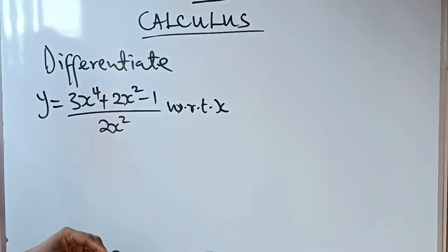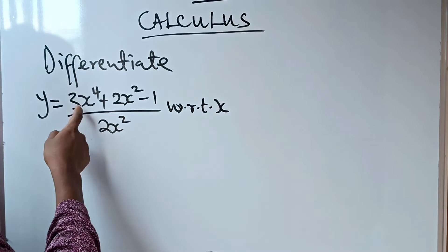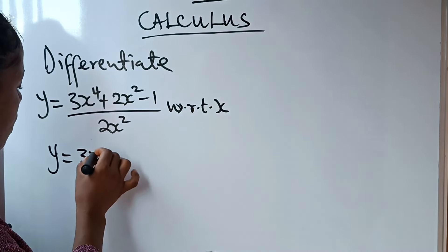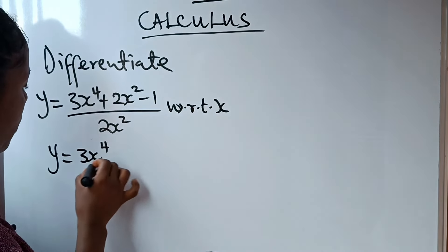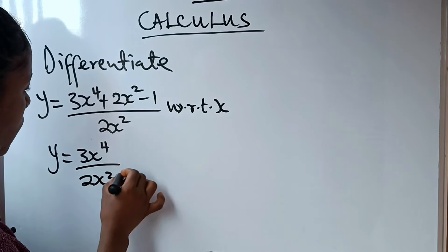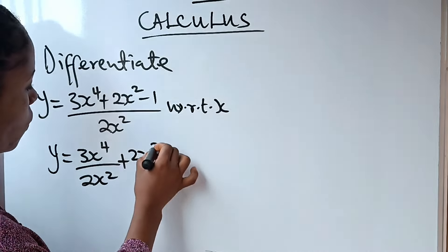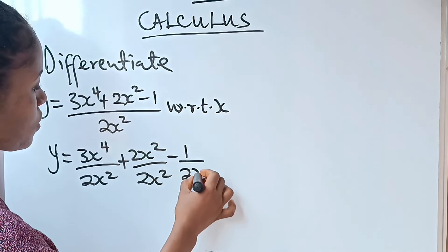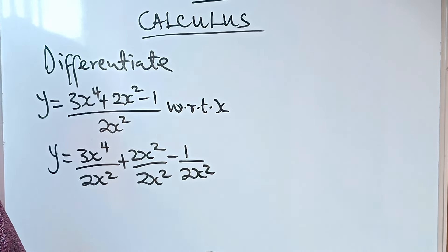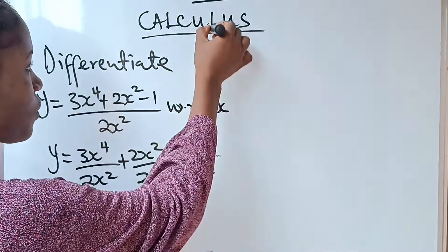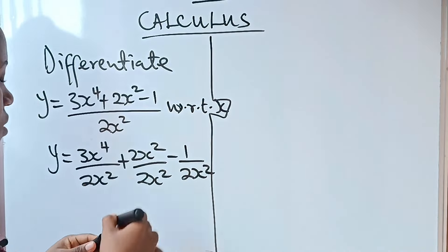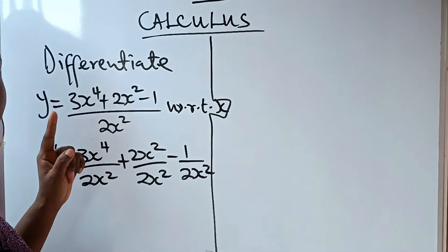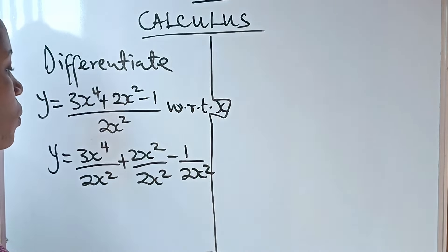We are given this equation. If I rewrite it, y is equal to 3x to the power of 4 divided by 2x squared, plus 2x squared divided by 2x squared, minus 1 divided by 2x squared. I've not really changed anything, because this 2x squared is dividing each of the terms in the numerator.